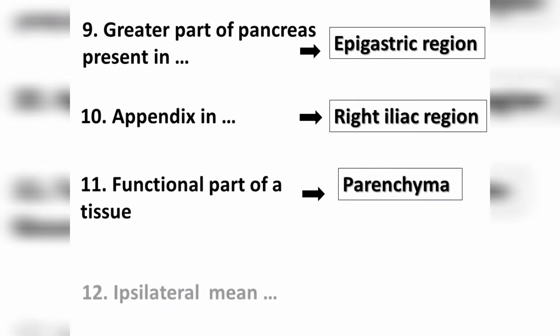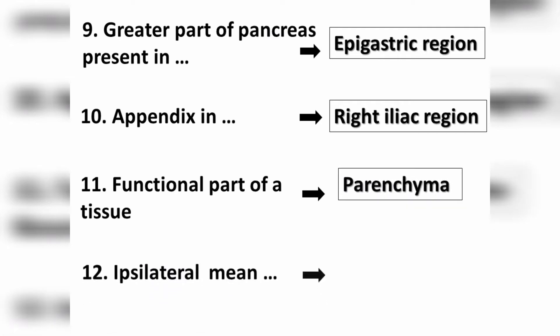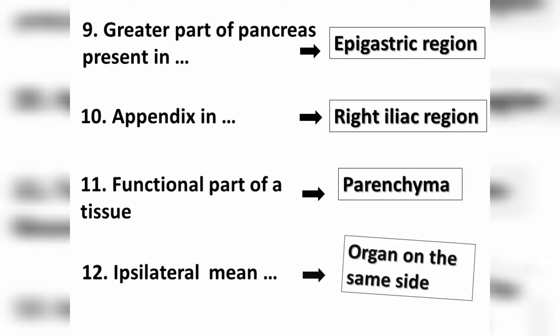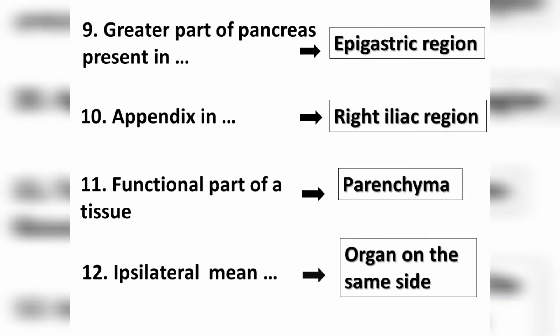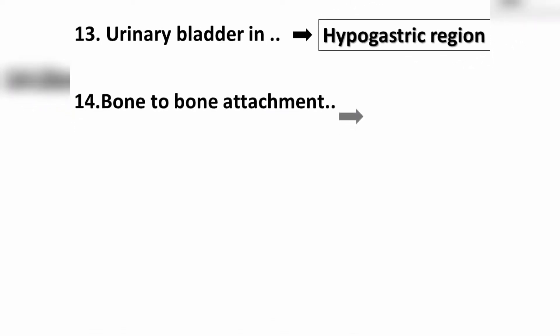Question number twelve: ipsilateral means an organ on the same side. Question number thirteen: the urinary bladder is present in the hypogastric region. Question number fourteen: bone-to-bone attachment is called a ligament.